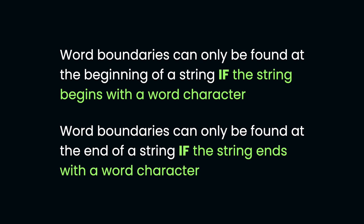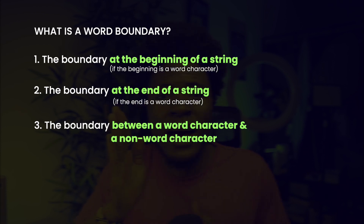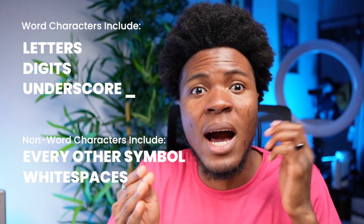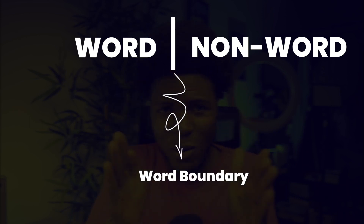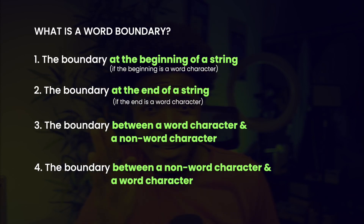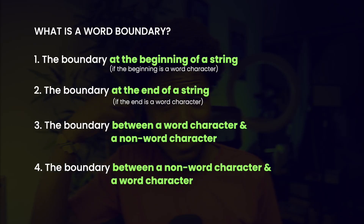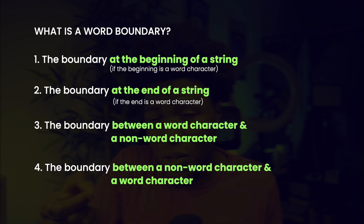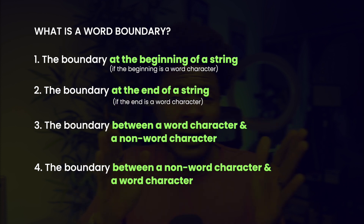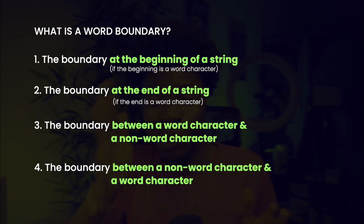The third thing is that a word boundary is the boundary between a word character and a non-word character. Word characters include letters, digits, and the underscore symbol — every other symbol and whitespace are non-word characters. And fourth, the boundary between a non-word character and a word character is also a word boundary.